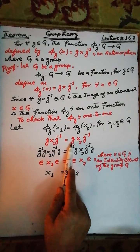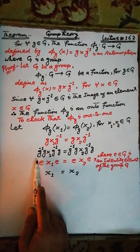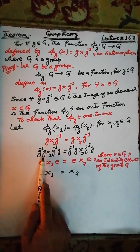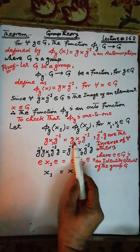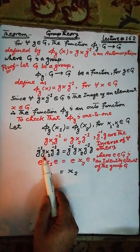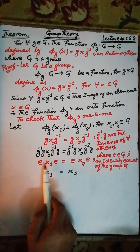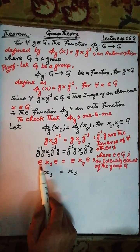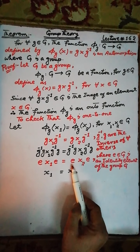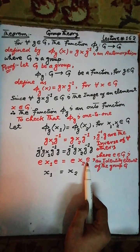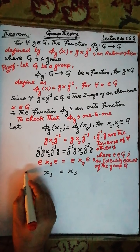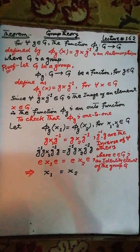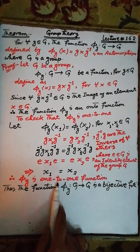Operating g⁻¹ to the left side and g to the right side of this equality, and since g⁻¹ and g are inverse elements of each other in the group G, g⁻¹g under the binary operation defined in G is equal to the identity element e. After this operation, ex₁e under the binary operation defined in G equals x₁, and similarly ex₂e equals x₂. That is, x₁ = x₂. Therefore the function π(g) is a one-to-one function.